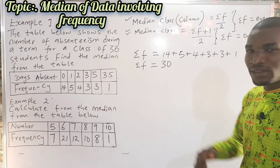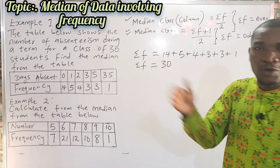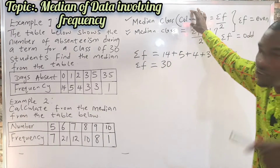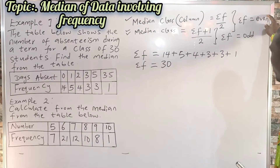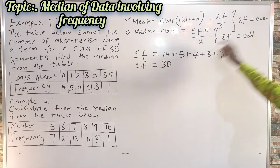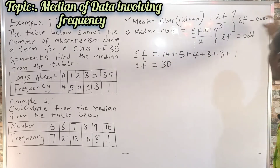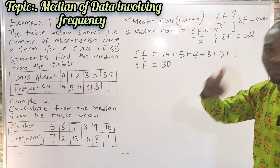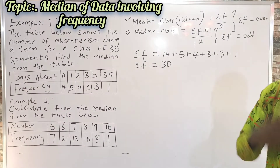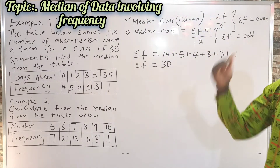The next step is to find our median class. There are two formulas: we use the first formula when the summation of frequency is even. Is 30 even or odd? Since 30 can be divided by 2 without a remainder, 30 is an even number. Hence, we use the first formula.